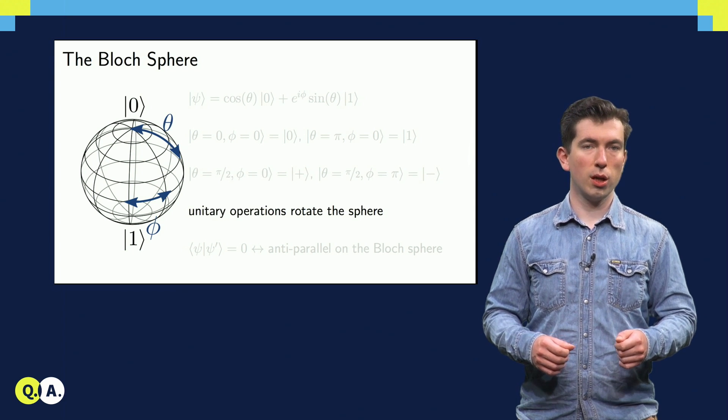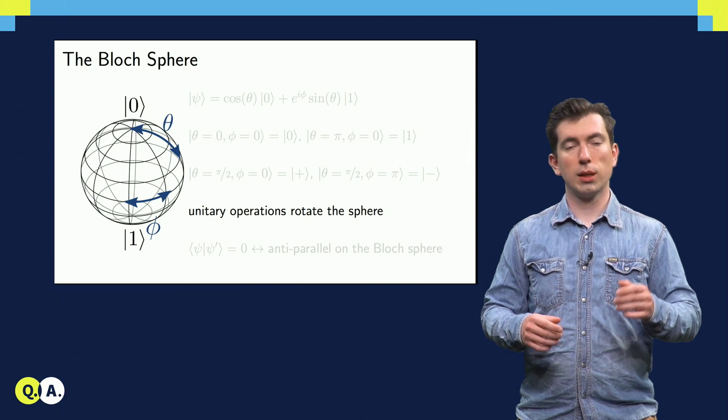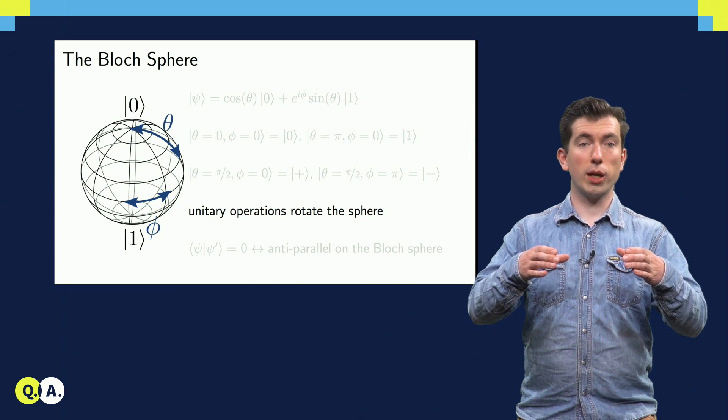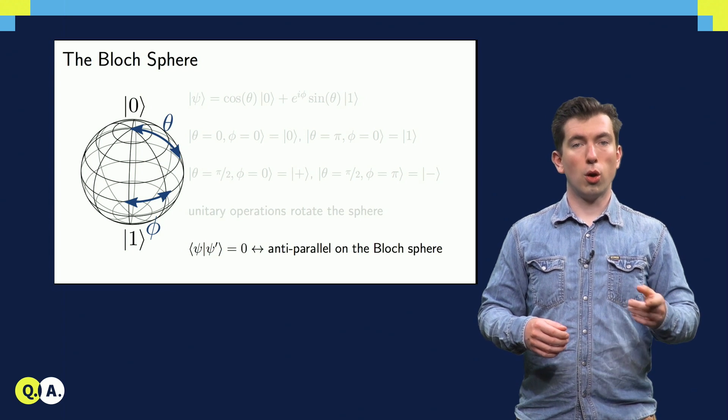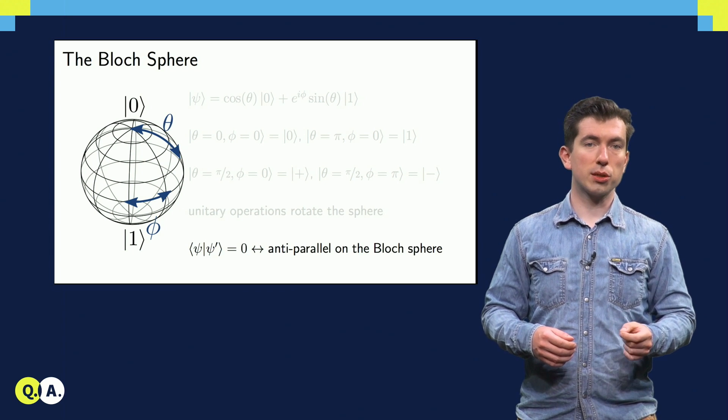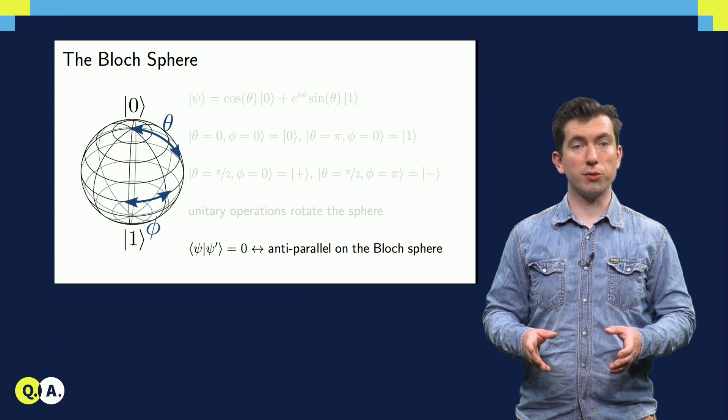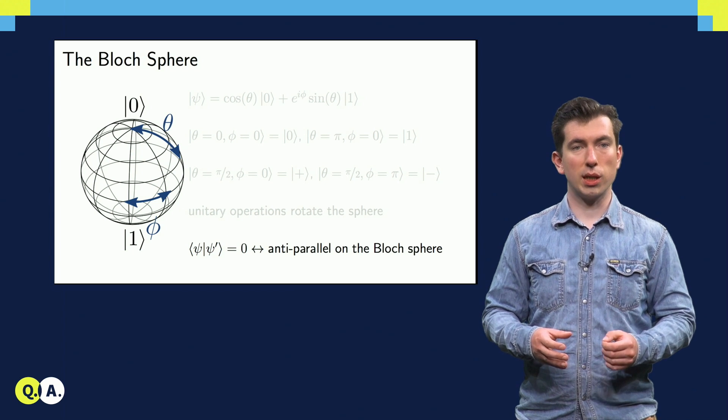Unitary operations, which change the basis we're working in, effectively rotate the sphere. For example, the Hadamard operation from earlier rotates the plus-minus states on the equator by 90 degrees until they're at the poles. Also note that the states on opposite sides of the sphere are actually orthogonal, so this mapping does not preserve the angle between states, but is still useful for describing single-qubit states and operations.